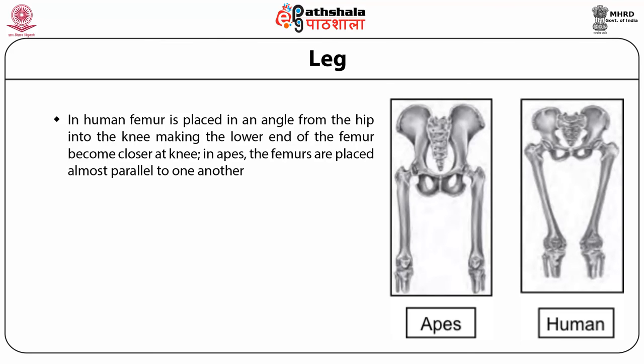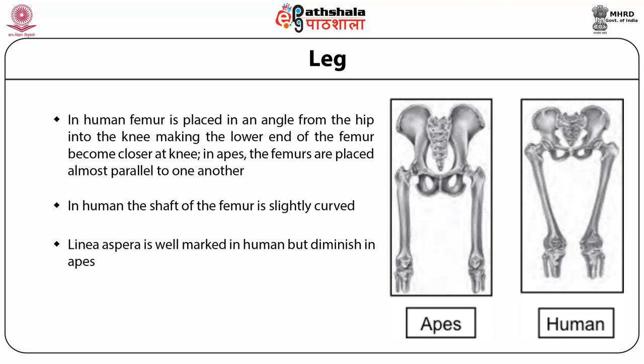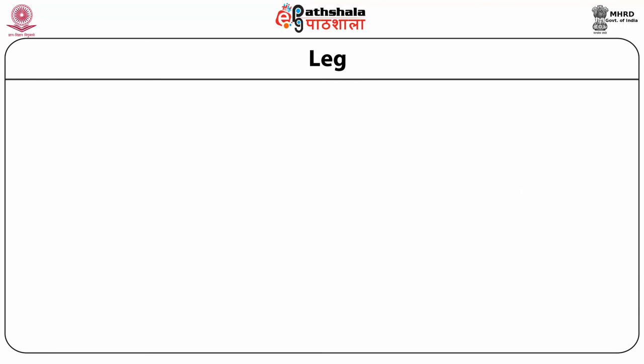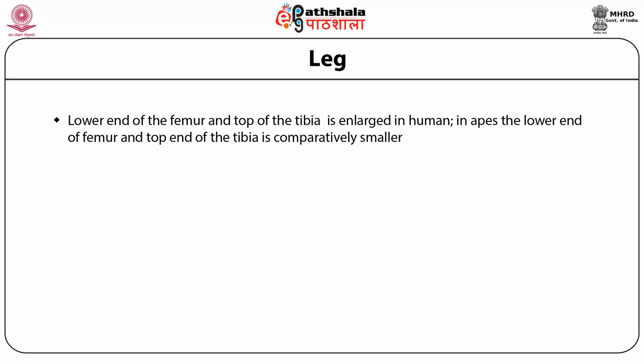To bear the weight of the body, the shaft of the femur in humans is slightly curved. The linea aspera is well marked in humans but diminished in apes. The distal end of the femur, called the femoral condyles, and the top of the tibia are enlarged in humans, whereas in apes the lower end of the femur and the top of the tibia are comparatively smaller. Overall, the leg is lengthened relative to trunk length compared to apes during the course of evolution, and longer legs are advantageous because of the increased stride length and efficiency in walking.